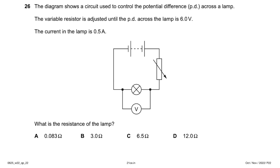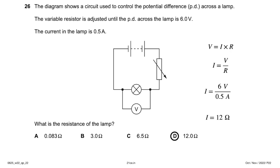A circuit controls the potential difference across a lamp. The variable resistor is adjusted until the potential difference across the lamp is 6 V and the current is 0.5 A. Using V = IR: R = V ÷ I = 6 ÷ 0.5 = 12 Ω. Answer: option D, 12 ohms.